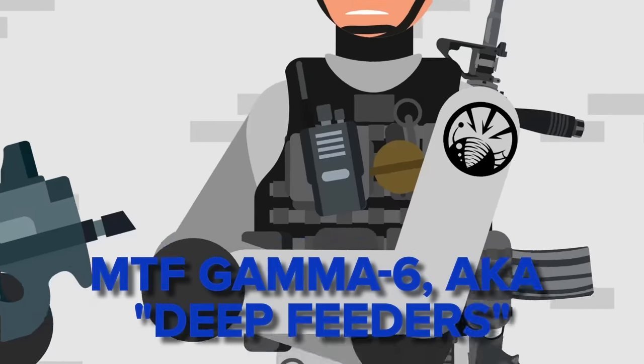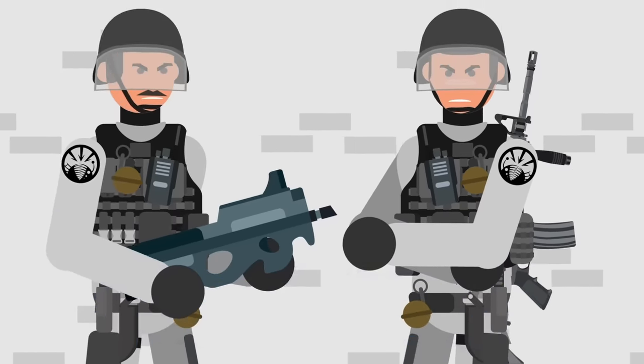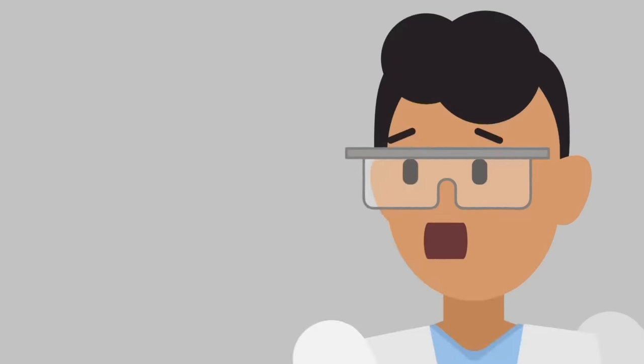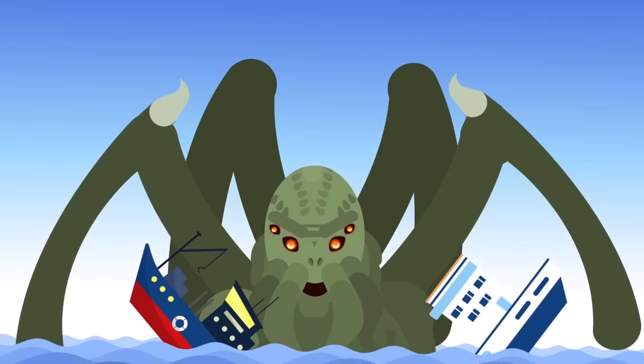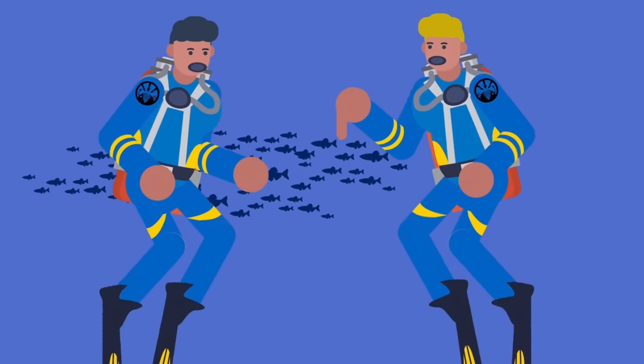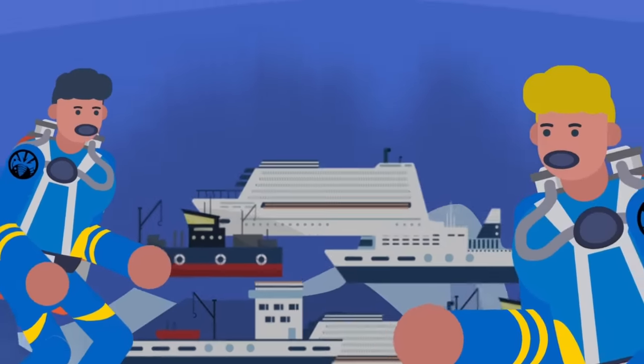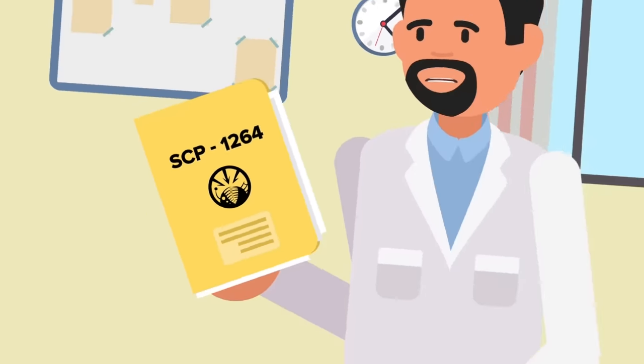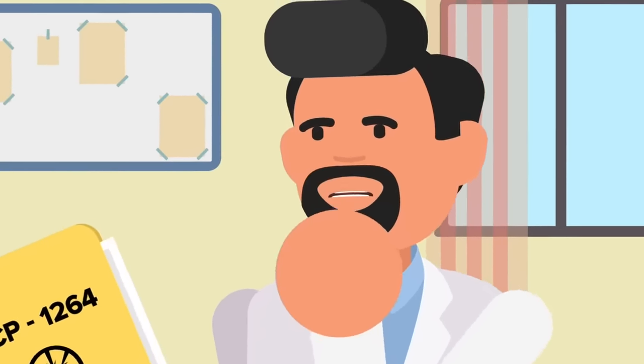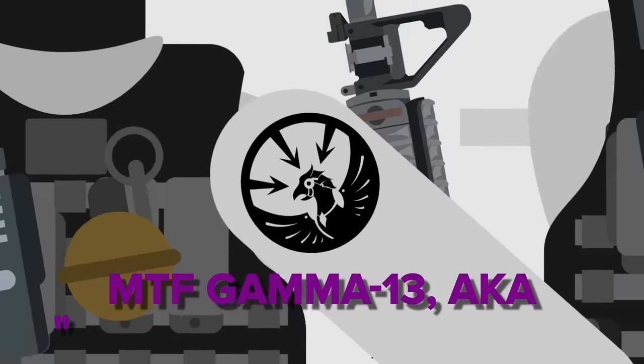MTF Gamma-6, aka Deep Feeders, investigate and track deep sea or oceanic anomalies, a job that commands the ultimate respect from people with thalassophobia - that's the fear of the deep ocean. If something terrifying and mysterious is stirring down there in the abyss, you better believe Gamma-6 are going to be the first ones down. They keep a close eye on a number of anomalies such as SCP-1264, an underwater amalgamation of sunken ships eager to drag down more vessels and add them to its mass.